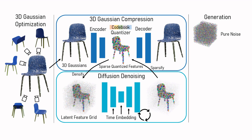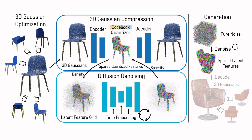The generation process starts from pure noise which is iteratively denoised. Finally, the sparsified latent features are decoded into 3D Gaussians that can be efficiently rendered in real time.